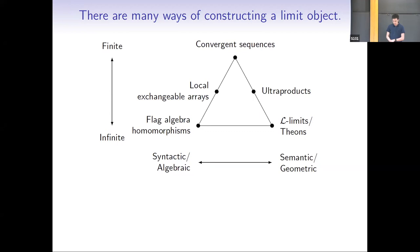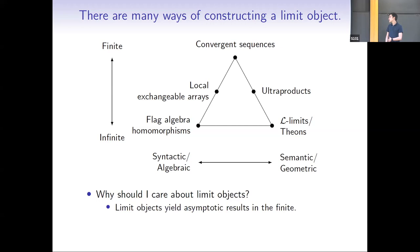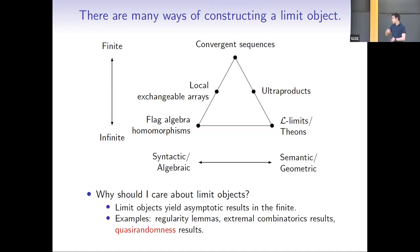Instead of talking about the limit objects themselves, let me focus on why you should care about having different limit objects. Limit objects yield asymptotic results in the finite, and different kinds of limit objects are necessary to prove different kinds of theorems. For example, you can prove regularity lemmas using limit theory, you can prove some extremal combinatorial results, and you can prove quasi-randomness results — which will be the focus of the second part of the talk.